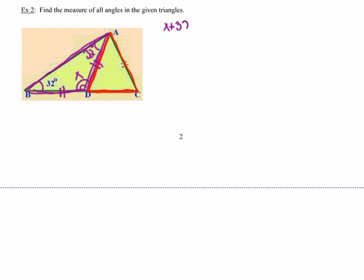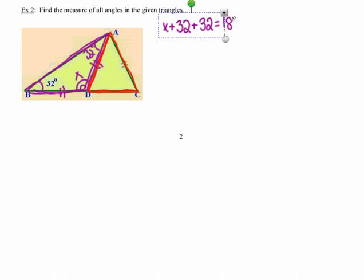The vertex angle I'm going to call X. And now I can write an equation for the purple triangle similar to the equations that I wrote in the first example. So the three angles added together must total 180. So the measure of angle X, or my vertex angle, must be 116.